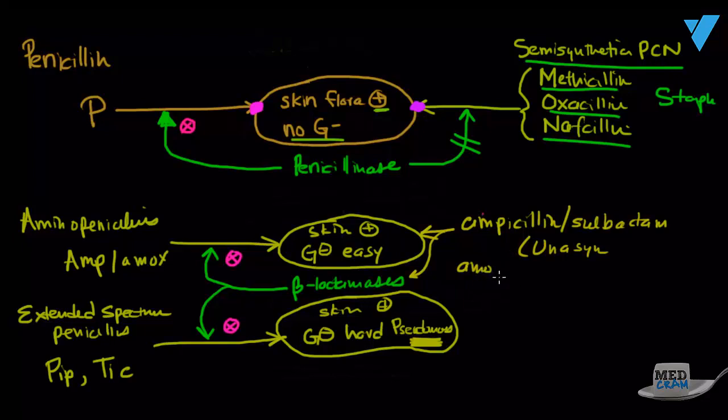Also, we would take amoxicillin and couple that with clavulonic acid and we would come up with Augmentin. And that would do the same thing. We would be able to attack that bacteria because we would get rid of the beta-lactamase.